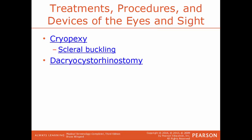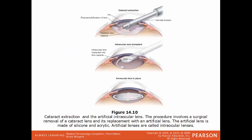Dacryocystorhinostomy is the creation of a new opening within the lacrimal sac and the nasal cavity, usually because there is a blockage somewhere within the lacrimal sac. In this image, we have an example of cataract extraction and then the implanting of the IOL — the lens covered with a cataract is taken out and the artificial intraocular lens is put in its place.